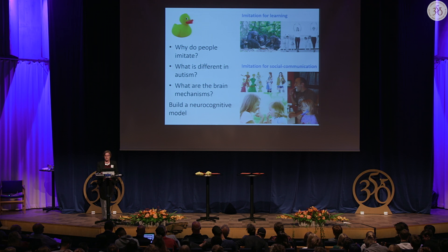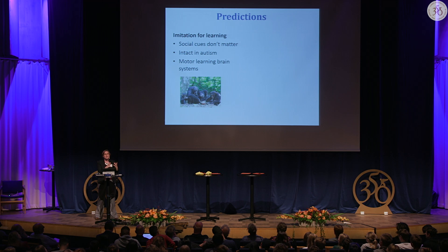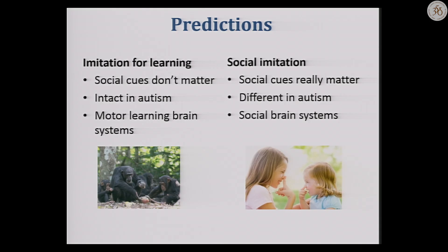These two different theories make different predictions. If imitation is about learning about the world and physical objects, then what should matter is the object in front of you — not what other people are doing. Skills and object use tend to be intact in people with autism, and the brain systems we'd expect would be those doing motor skill learning. Whereas if imitation is much more social, we'd predict that social cues do matter, that imitation will be very different in autism, and that we'll find social brain systems.